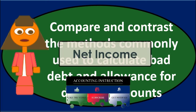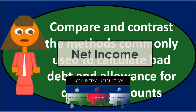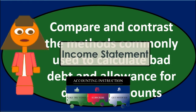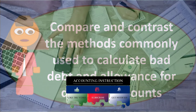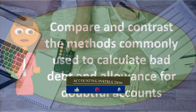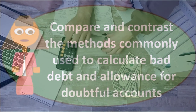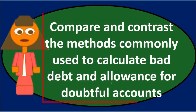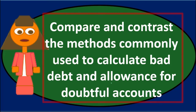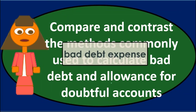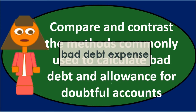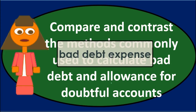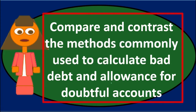Debiting bad debt expense reduces net income on the income statement. This corrects the overstatement of revenue — if we recorded revenue for amounts we are not going to collect, recording a corresponding bad debt expense brings net income back to a more accurate level.